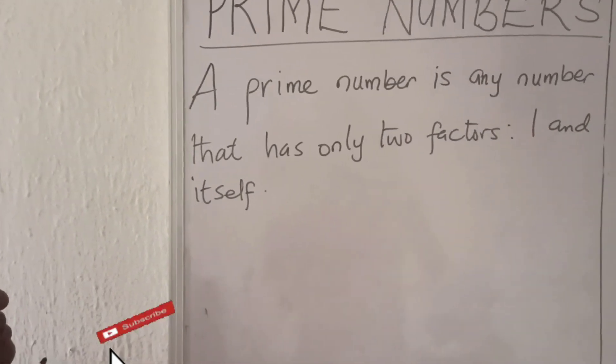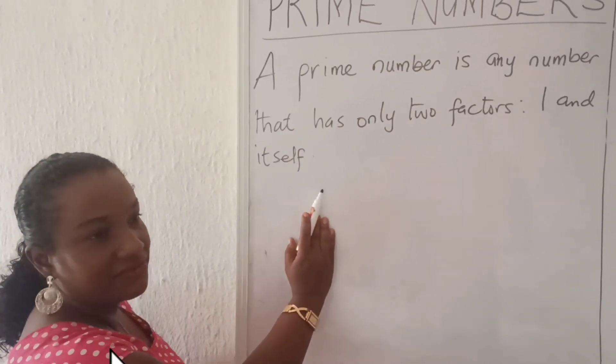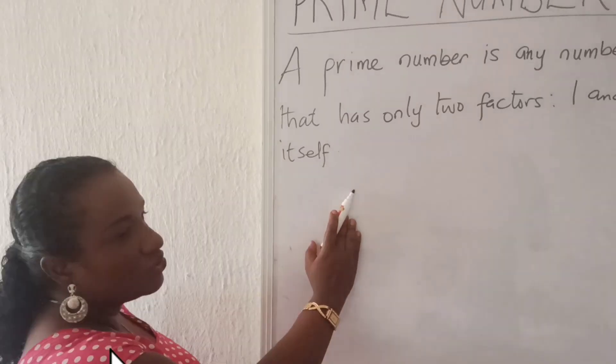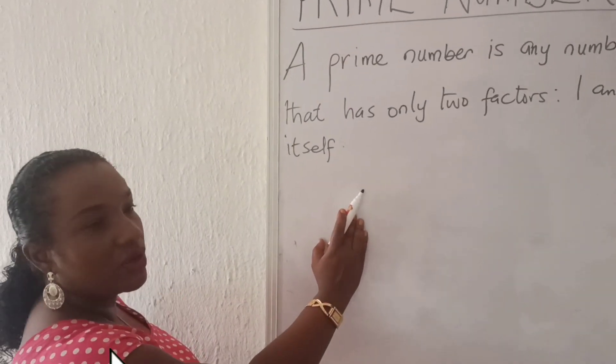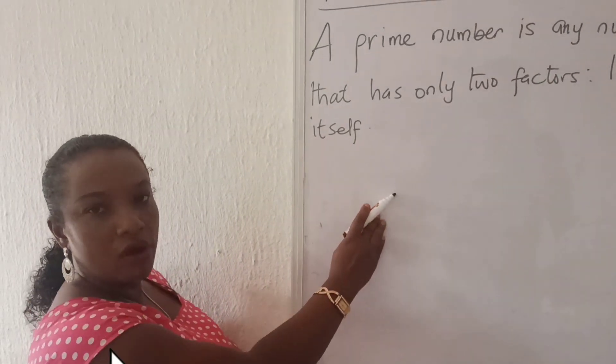This means that a prime number is any number that is divisible by just two numbers. And those two numbers must be that particular number and one.